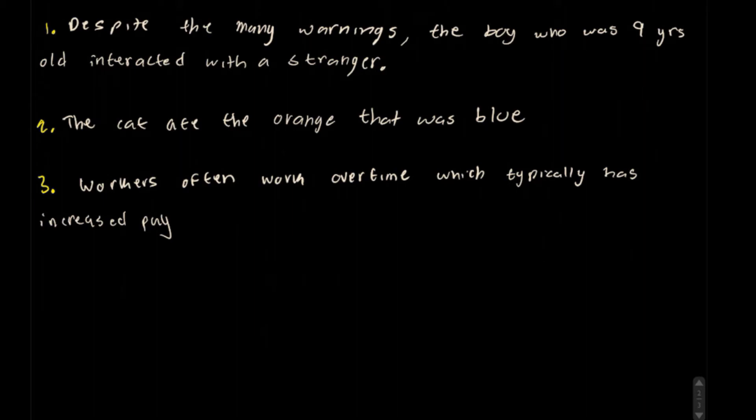Alright, so, number one. Despite the many warnings, the boy who was 9 years old interacted with a stranger. Now, this one's pretty simple. Despite the many warnings, again, you identify this with a comma. The boy who, this again, a relative pronoun as we learned earlier. Who was 9 years old, interacted with a stranger. So, if we read this again, the boy interacted with a stranger. You see, a very simple sentence when you eliminate these non-essential phrases.